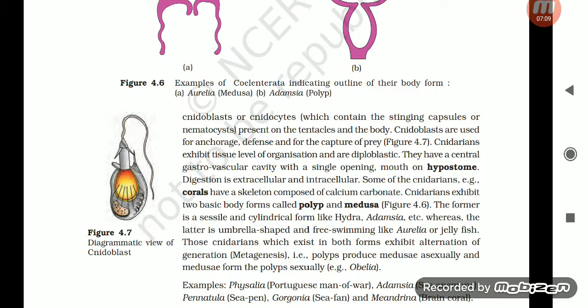Cnidarians exhibit two basic body forms: polyp and medusa. The polyp is a sessile and cylindrical form like Hydra and Adamsia, whereas the medusa is umbrella-shaped and free-swimming like Aurelia or jellyfish. Those cnidarians which exist in both forms exhibit alternation of generation, called metagenesis. Polyps produce medusae asexually and medusae form polyps sexually, for example in Obelia.